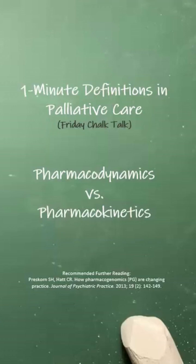One classic example in our palliative care population of kinetics and dynamics at play are patients on methadone in the hospital being prescribed fluconazole. That inhibits our CYP3A4, decreasing the metabolism of methadone.